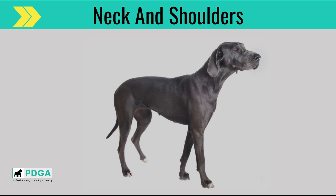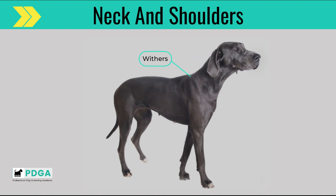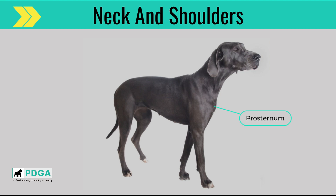Next, we will look at the neck and shoulder section. The nape is where the neck joins the head at the back of the skull. The throat is below the jaws. The crest starts at the nape and ends at the withers. The withers are the top point of the shoulders. The shoulder is the top section of the foreleg from withers to the elbow. The prosternum is the bone that ties the ribcage together and is the top of the sternum.